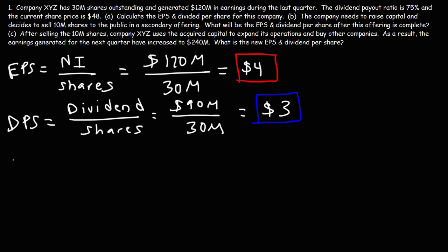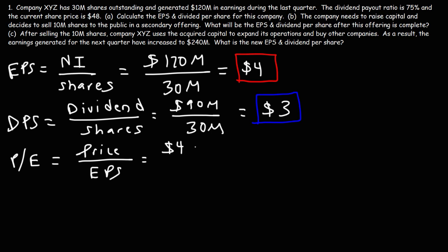Now let's calculate the price to earnings ratio, or P/E ratio. The price to earnings ratio is the price of the stock divided by the EPS. So it's $48 per share divided by the earnings per share of $4, giving a price to earnings ratio of 48 divided by 4, or 12.